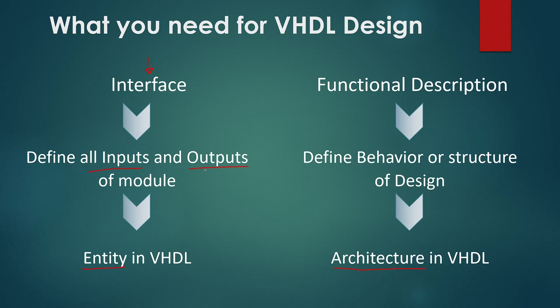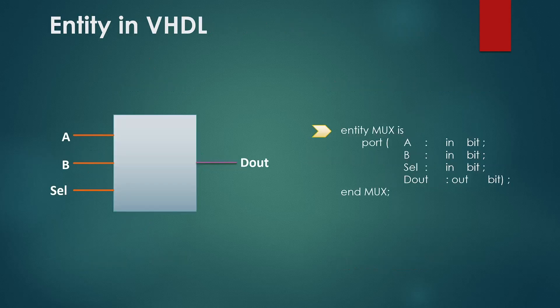Although the architecture is a separate design unit, it is always associated with an entity, and any signal defined in the entity will be visible in the architecture and can be used anywhere inside it. We normally define the entity with a symbol like a box representing our VHDL module, with lines connected to it called signals. These signals can be inputs or outputs — lines on the left are normally inputs and lines to the right are normally outputs of the module.